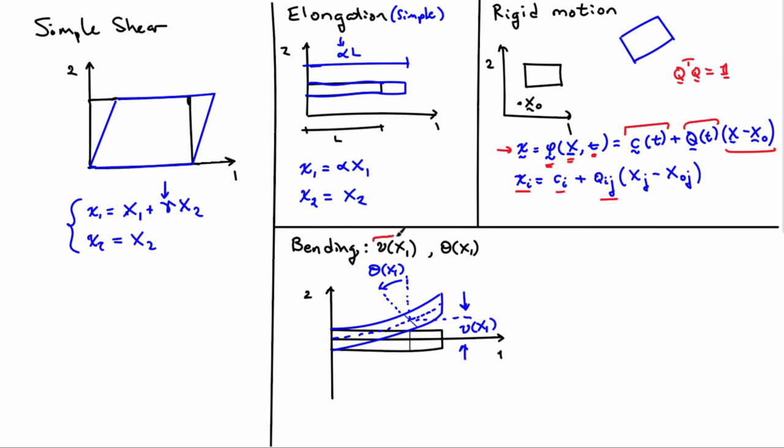In bending deformation what we have is a characterization of the deformation that depends just on two functions. The two functions are V—it's only a function of X1 and that's the deflection of the neutral axis—and theta, which is the rotation of cross sections of the beam. So it's a very restricted set of characterizing functions. There are only two of them and they only depend on X1, and out of this we can construct the full deformation map for the body.